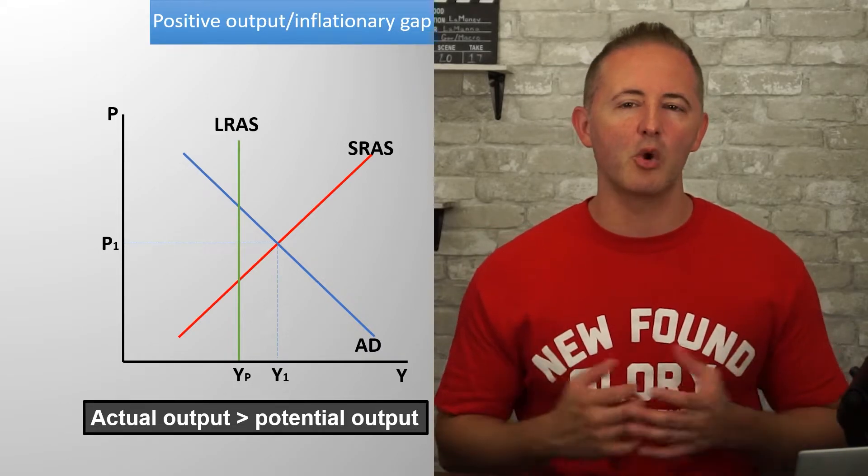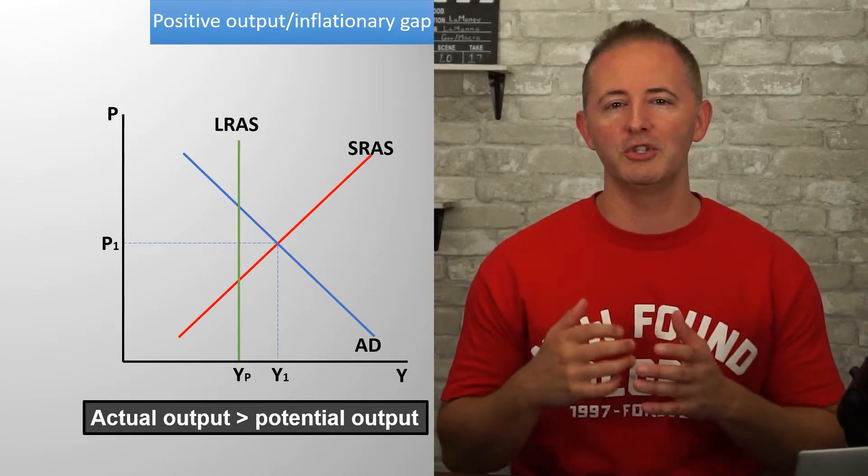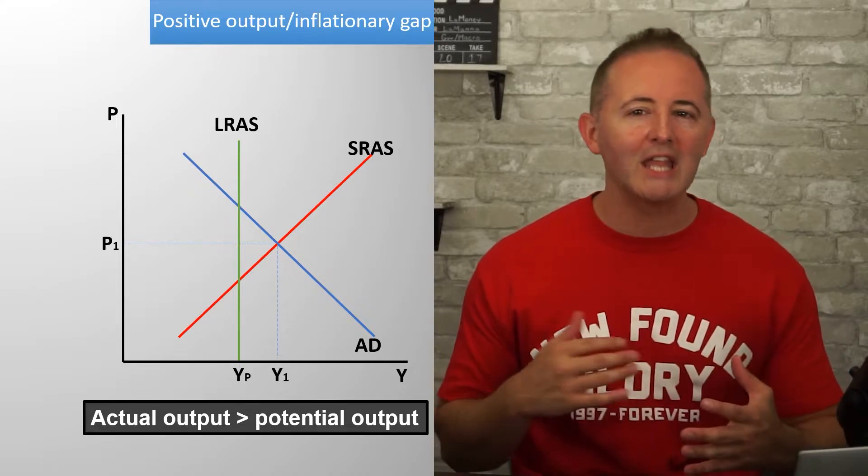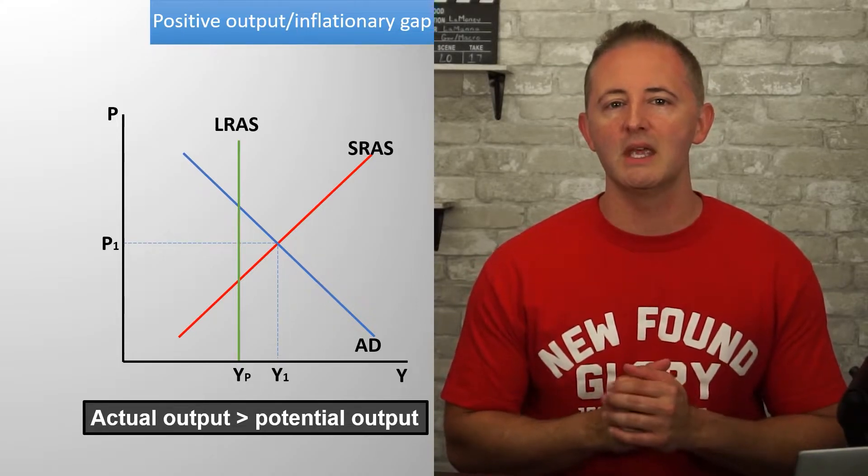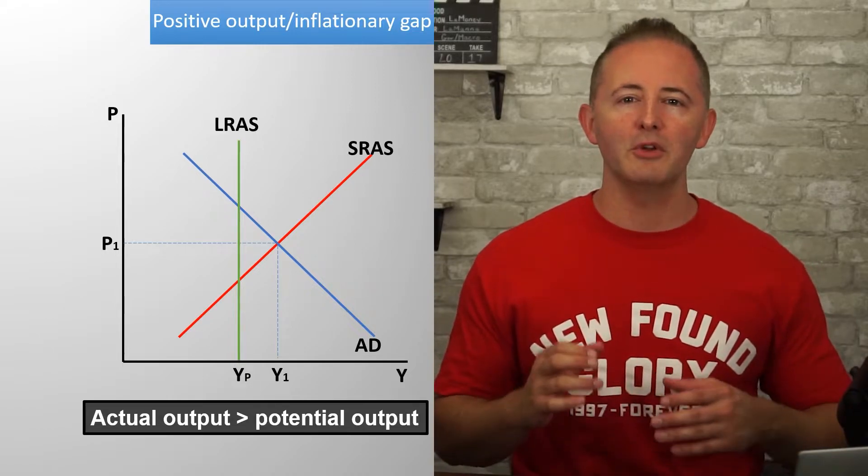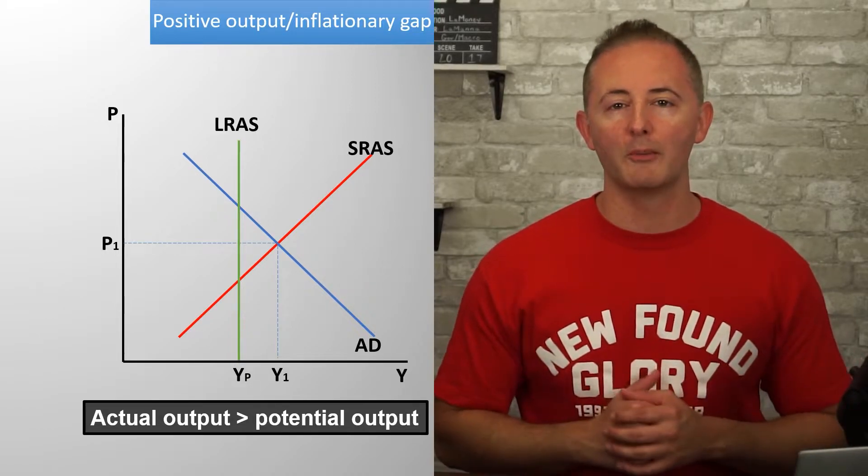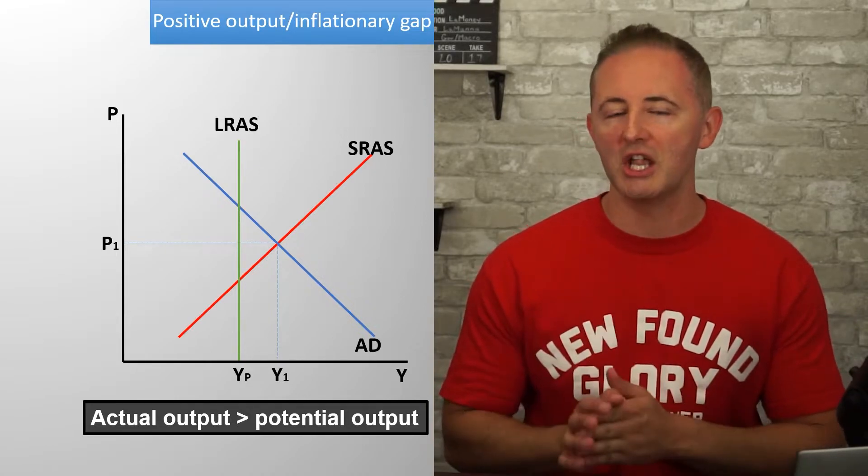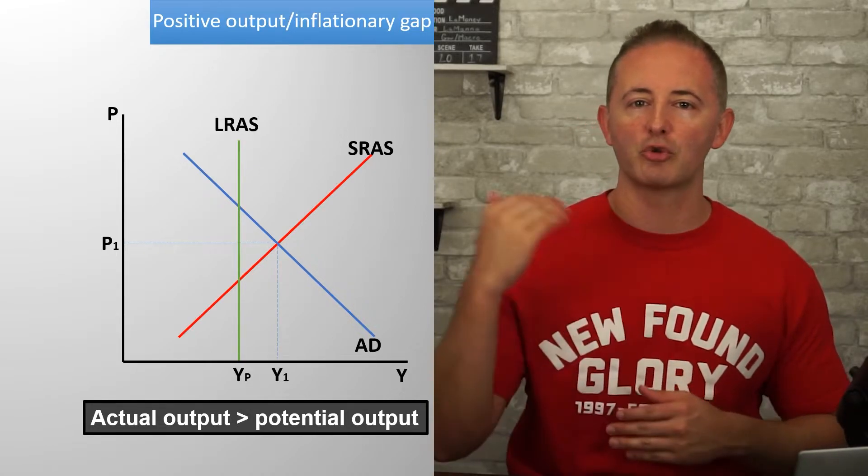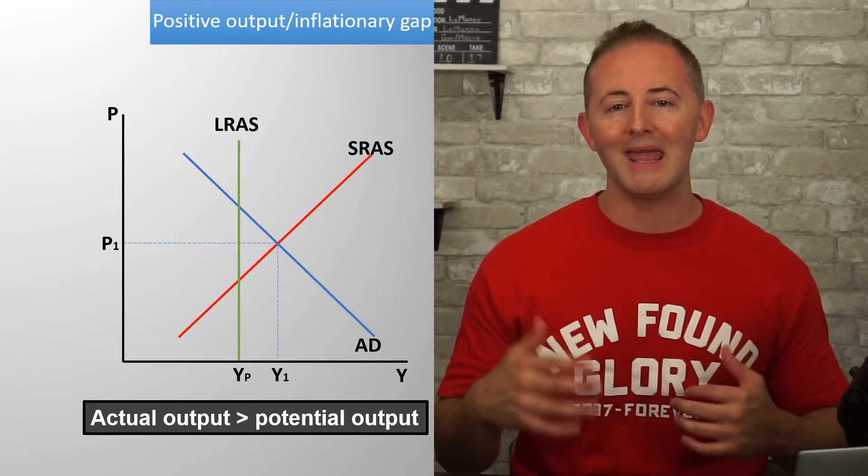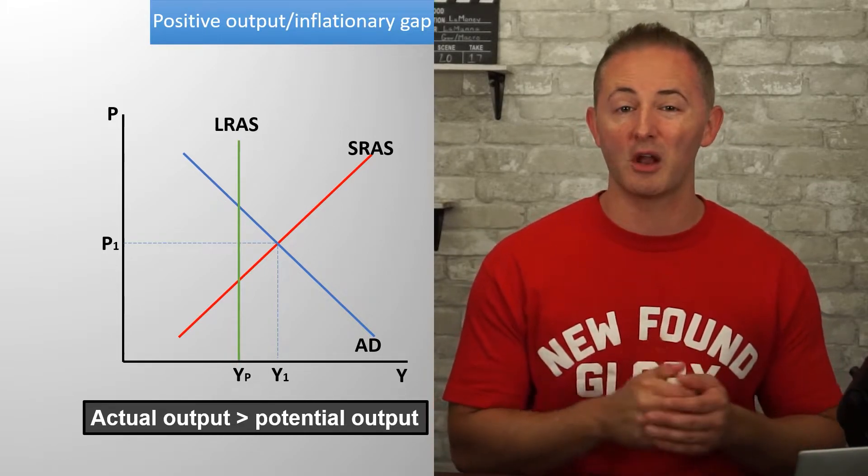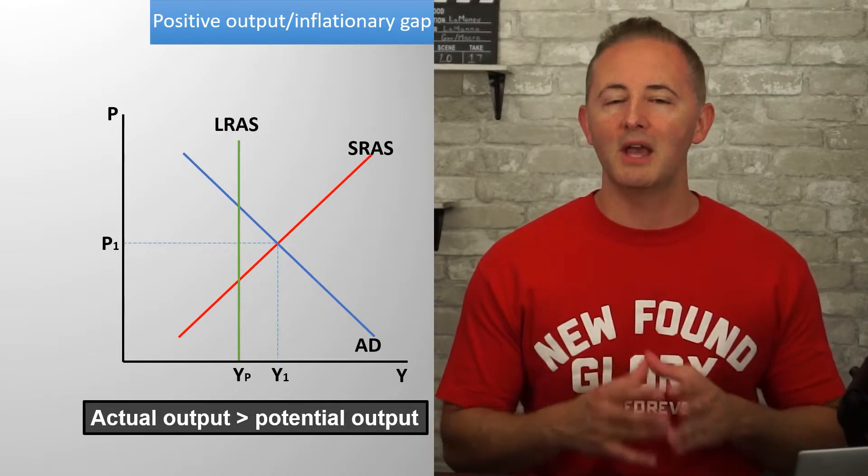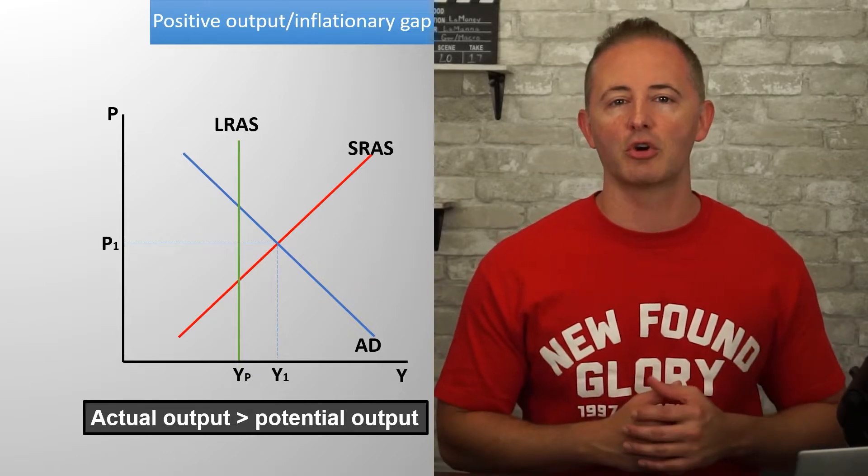And there's always the question, well, how is it possible for an economy to produce beyond potential output? And that's a good question that we've already kind of answered in the last couple of videos, but let's bring it home now. Remember that this is a short-run equilibrium. So that means that wages and input prices are fixed or that they don't change. So when the price level rises, businesses want to increase their output in response to the higher prices their products are selling for. And they're able to increase their output in the short run because input prices and wages are fixed in the short run.